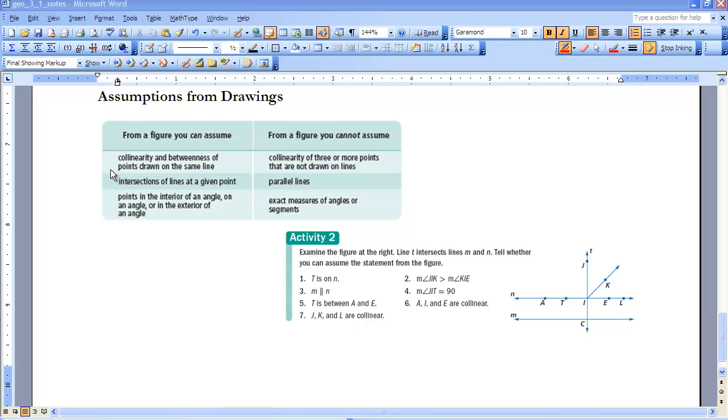A couple things that you can assume. Collinearity and betweenness of points drawn on the same line. So if you look, you see an actual line and you see points on that line, so you can assume that they're collinear. And since they're collinear, points and they're all on the same line, that means points that look to be between things are. So T is between A and I. E is between L and T.